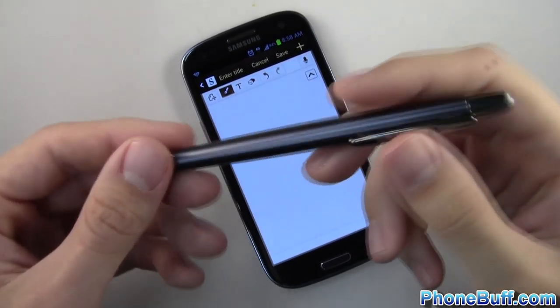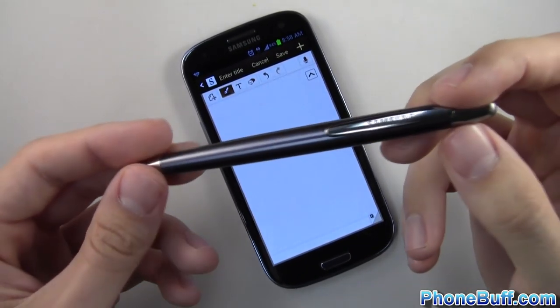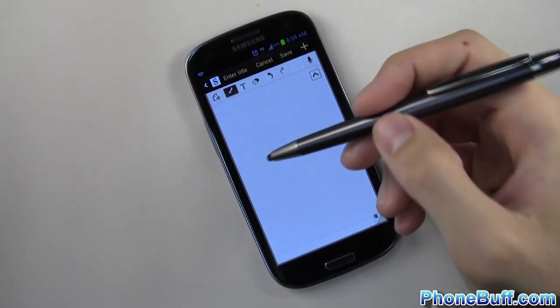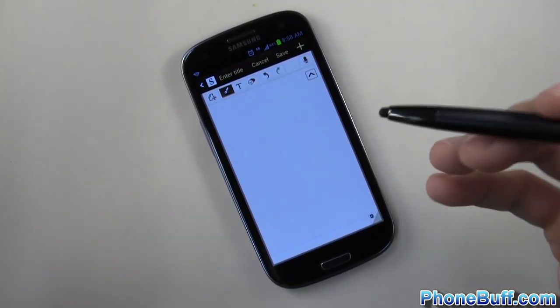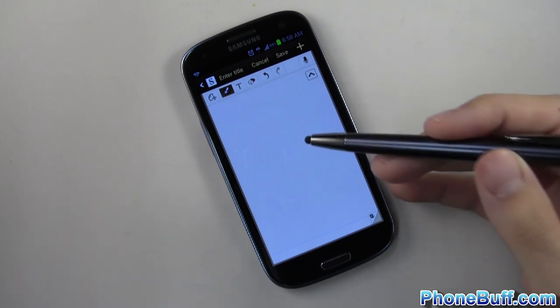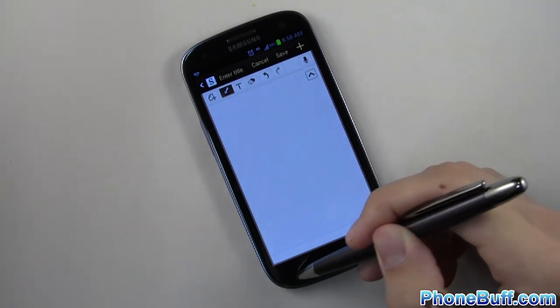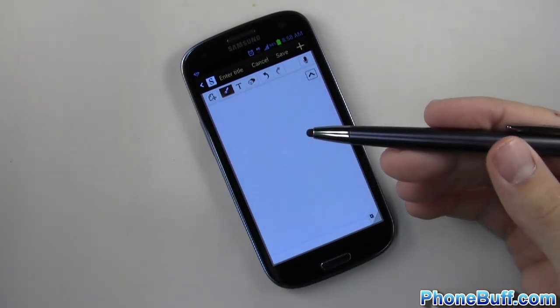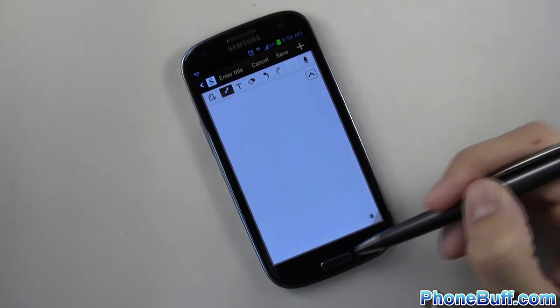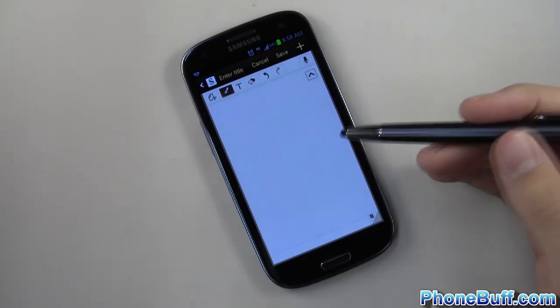Overall, I do like the C pen, and I do feel like it gives you more precise input when it comes to a stylus on the Galaxy S3, and it's made specifically for the Galaxy S3. I mean, so much so that it doesn't even work with the capacitive buttons where your typical ordinary stylus does. So that's something to keep in mind as well.